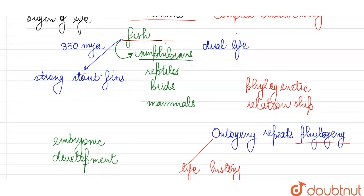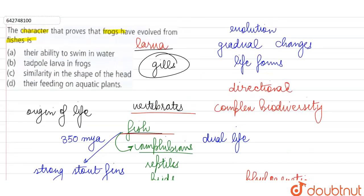So it shows that the fishes are the ancestors of frog and they have a very close relationship. Because ontogeny repeats phylogeny, that is why we are seeing such similarity. And our correct answer is here, option B: tadpole larvae in frogs shows that frogs are very closely related to the fishes and fishes are the ancestor of frog.